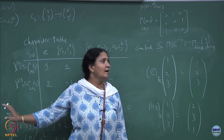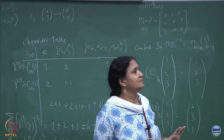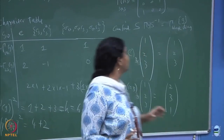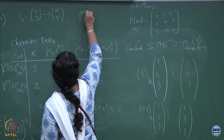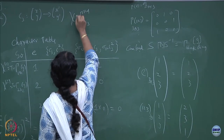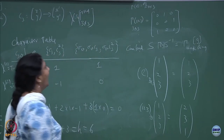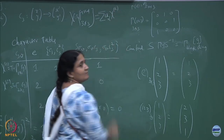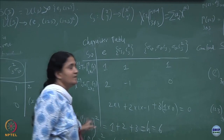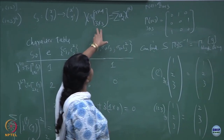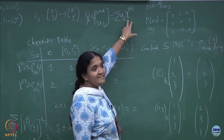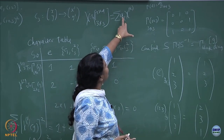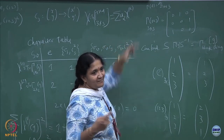This representation is reducible. When I write the character table I write only the irreducible representations — irreducible characters. All the other reducible characters — suppose I take this — I call this a reducible character, which is the trace of these matrices. I can write it as something like a sum over alpha of A_alpha times the character of alpha.